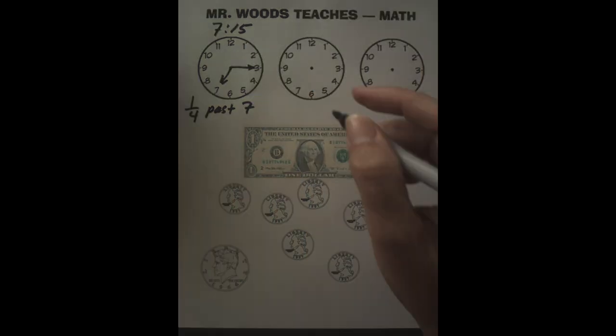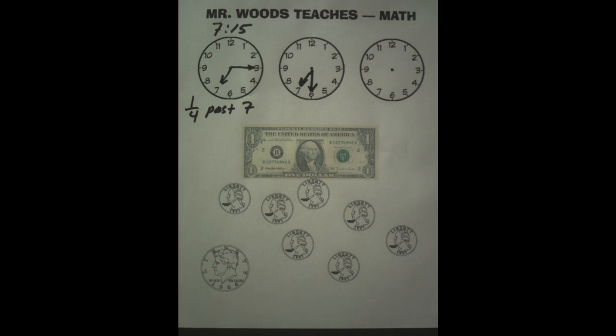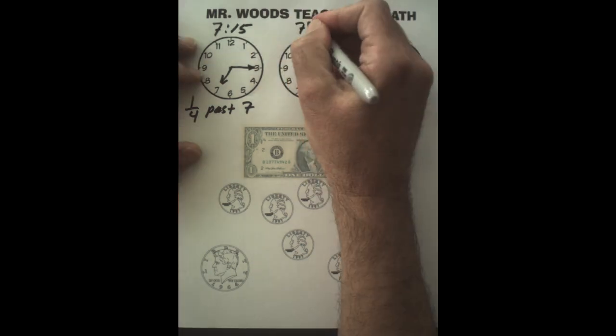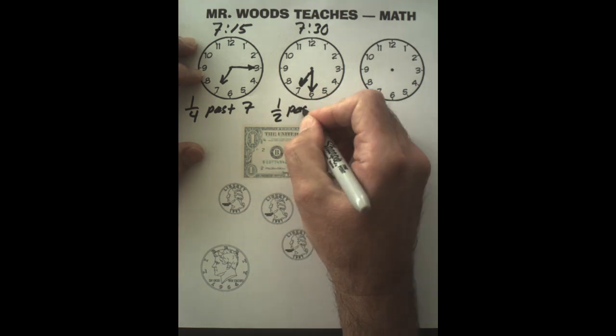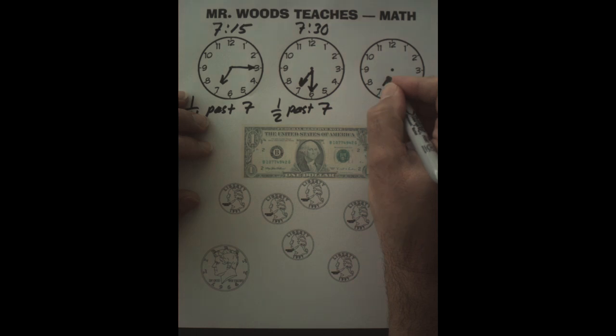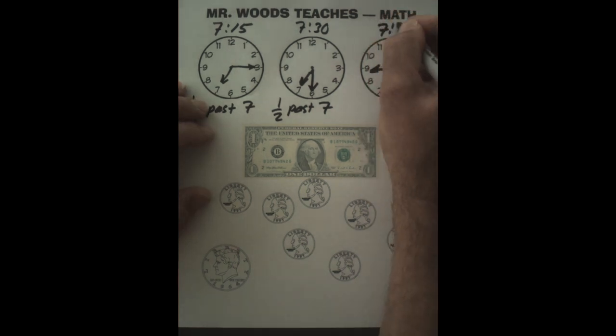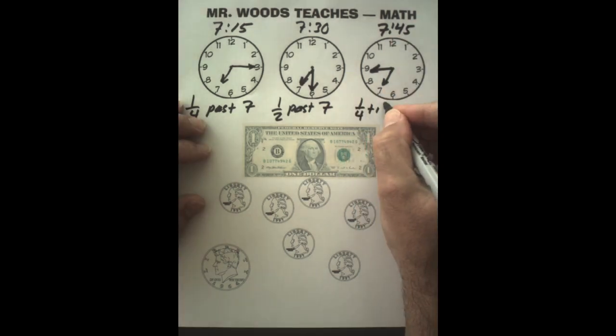Let's look at it again here. Seven, long hand. Some people can say that's seven thirty, or it's half past seven. Next up, short hand to the seven, long hand to the nine. That's seven forty-five, or a quarter till eight.